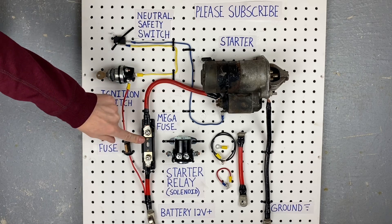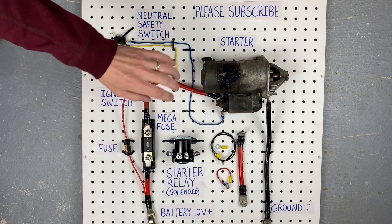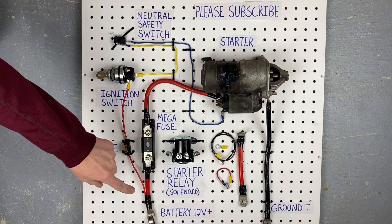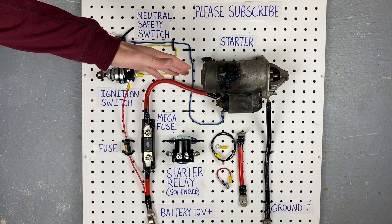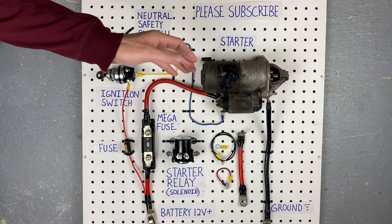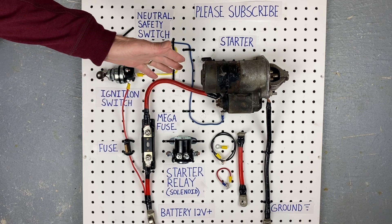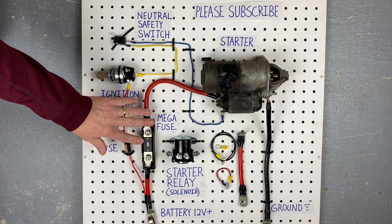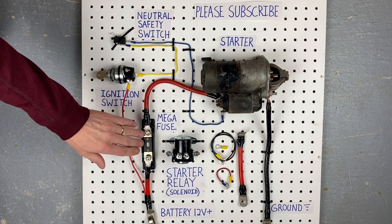This right here is a mega fuse. It doesn't just have an awesome name. It actually serves a really important purpose. Now a ton of old cars just had a battery cable that went right from the positive battery terminal to the starter. And that is actually really unsafe because if the wire was to chafe on an exhaust manifold or an inner fender or something like that and ground itself out, you could easily light the car on fire and that's not ideal. So I'm a firm believer that all circuits should be protected by some sort of fuse or fusible link. And in this case, I went with a mega fuse.